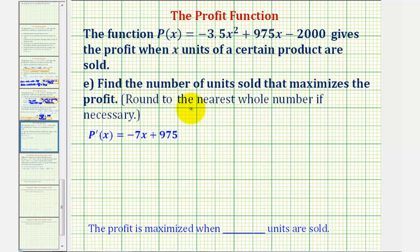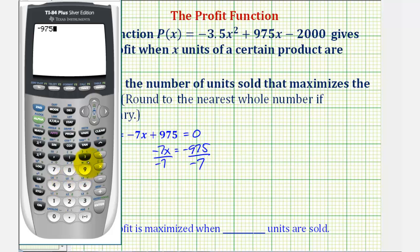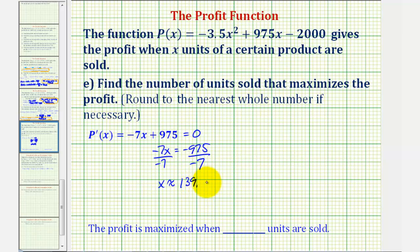For part E, we want to find the number of units sold that would maximize the profit. To maximize the profit function, we first find the critical numbers, where the first derivative equals zero or is undefined. We found the first derivative in part C. Since it's a linear function, it's never undefined. Setting it equal to zero and solving: subtract 975 from both sides and divide by negative seven, giving x approximately equal to 139.29. Now we should verify that this x value maximizes, not minimizes, the profit function.